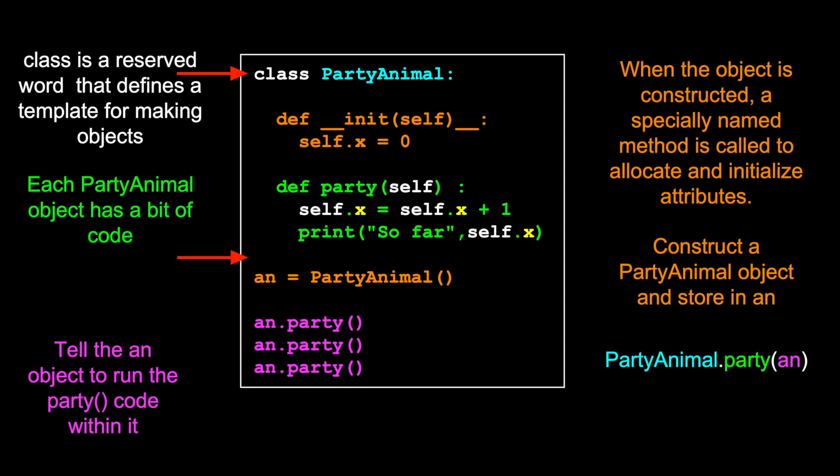Defining the class party animal. This is what we call constructing. We're constructing, using the party animal template or class, we are making a party animal. And then once we make that, we stick it in the variable an. And then we're going to call this party animal, this party method, three times, one, two, three.